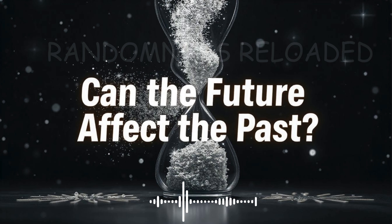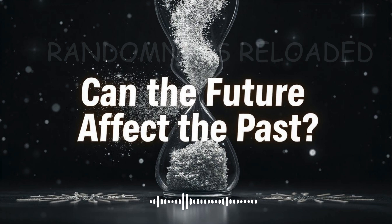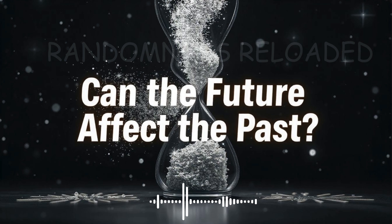I vaguely remember complex conjugates from my math classes, but why is this such a big deal? In quantum mechanics, wave functions often involve complex numbers, which include the imaginary unit. Taking the complex conjugate basically means you just change the sign of the imaginary part — it's a really routine operation used all the time in quantum calculations. But what this paper suggests is that this seemingly simple operation might actually be a hidden form of retrocausality.